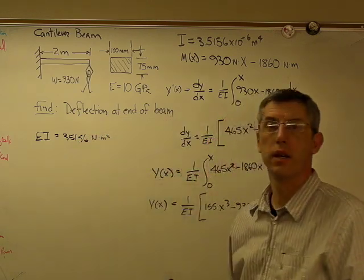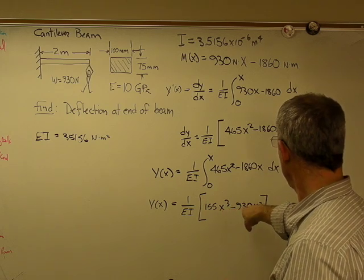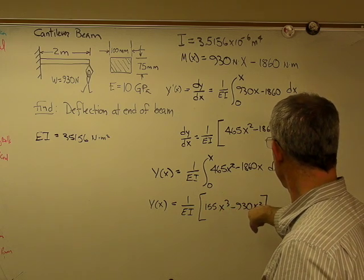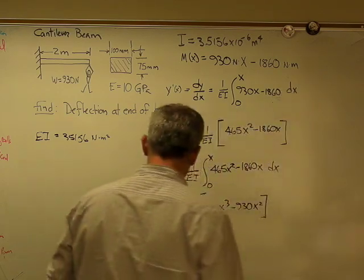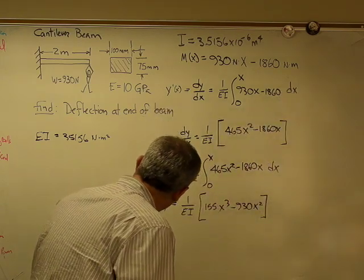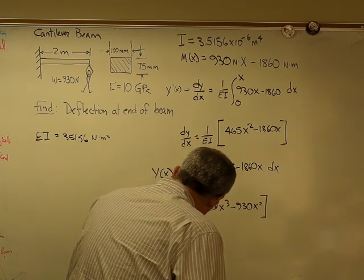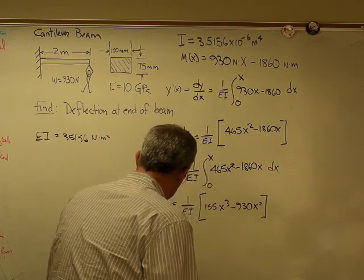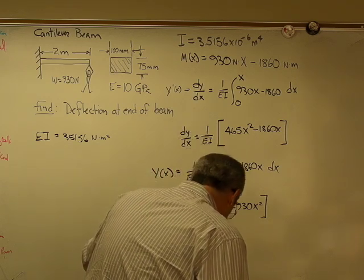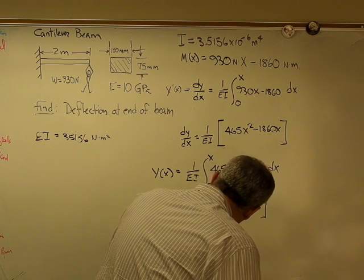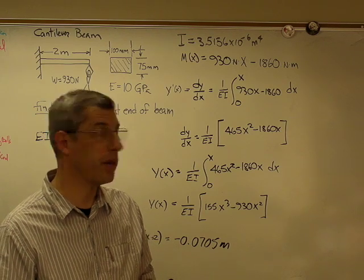So there we go. I've got EI. And this is going to be in Newton meters cubed. So it's going to come out to meters, I should say. And so y at x equals 2 turns out to be minus 0.0705 meters, or minus 70.5 millimeters.